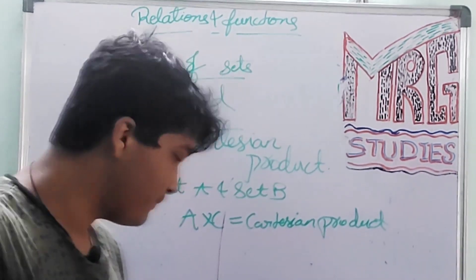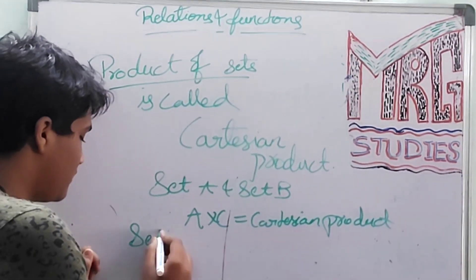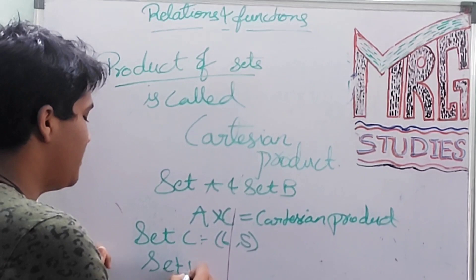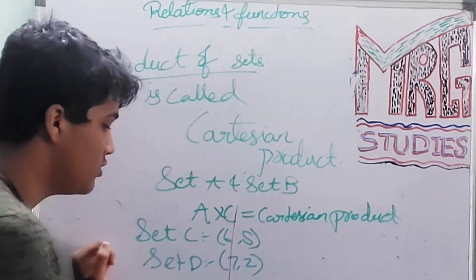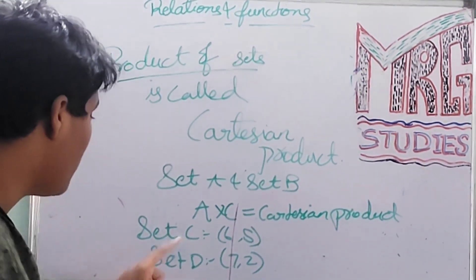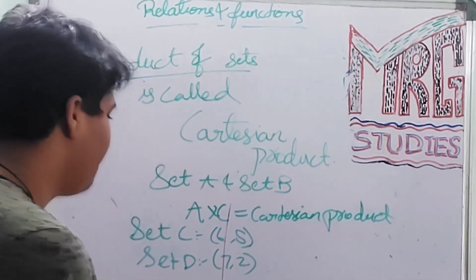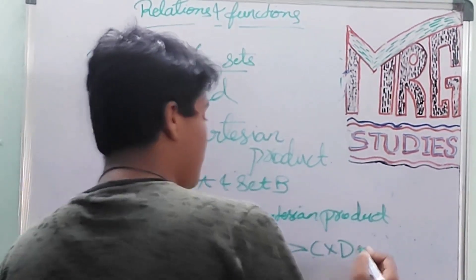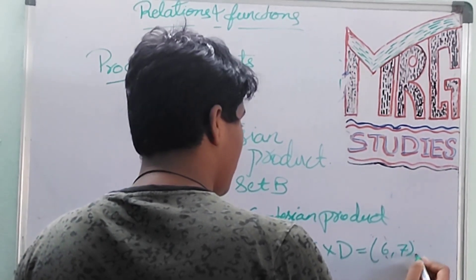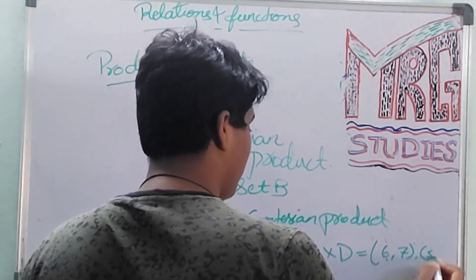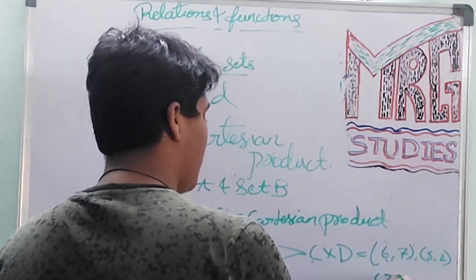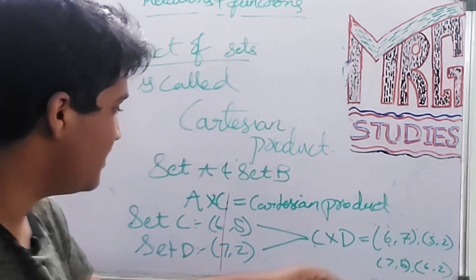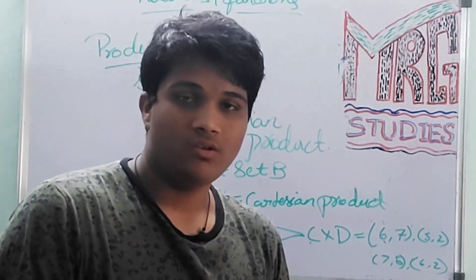If they ask: what is the Cartesian product of set C = {6, Y} and set D = {7, 2}? We should multiply these two sets. We will get: (6,7), (6,2), (Y,7), and (Y,2) as the combinations. This is called the Cartesian product.